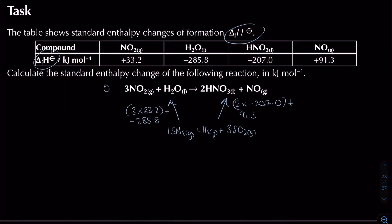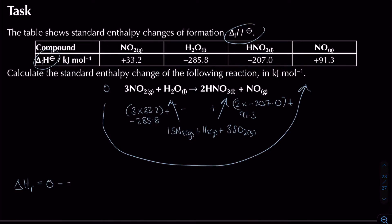The enthalpy change of this reaction equals zero, minus minus 186.2 (going against the arrow), then adding minus 322.7 (going along the arrow). The result is 136.5 kJ/mol.